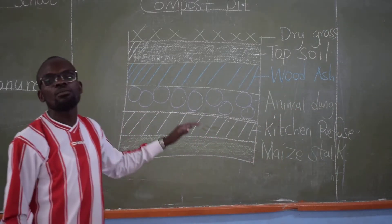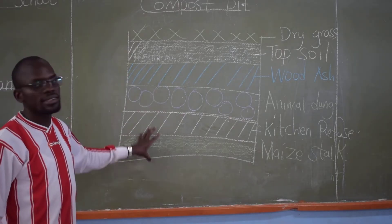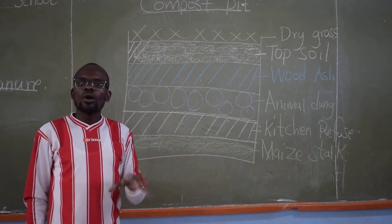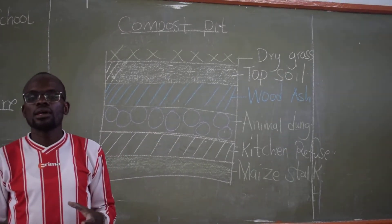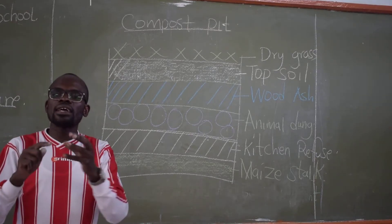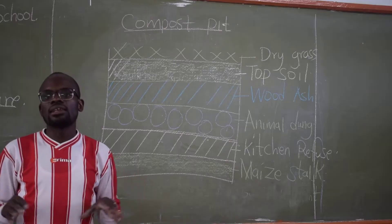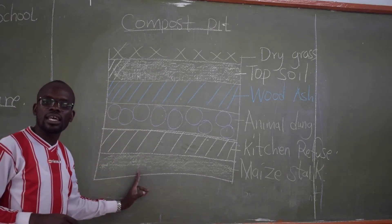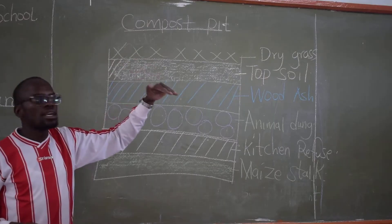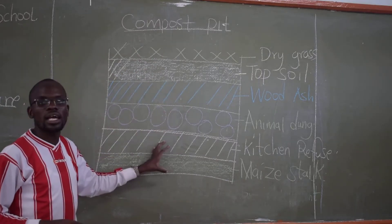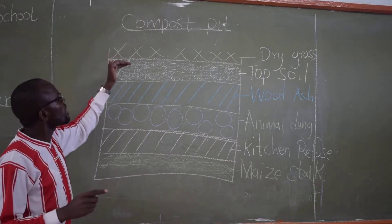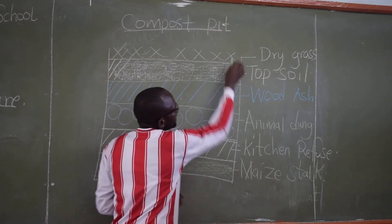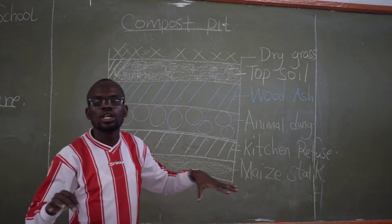Now let's look at the use of each material in this arrangement, starting from the top. Why do we need the dry grass? The work of the dry grass is to act as mulch. Mulch is made out of dry grass — if you don't have dry grass you can use dry leaves. The work of this mulch is to prevent excessive heating of the materials inside, to prevent sun rays from reaching them, because we don't want the materials to dry out. We have to preserve the moisture content inside.